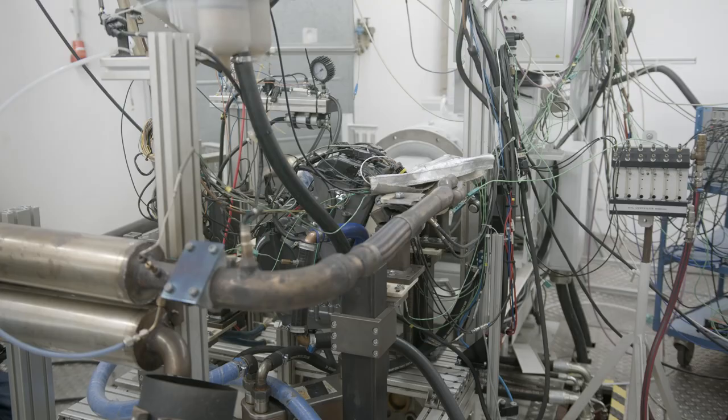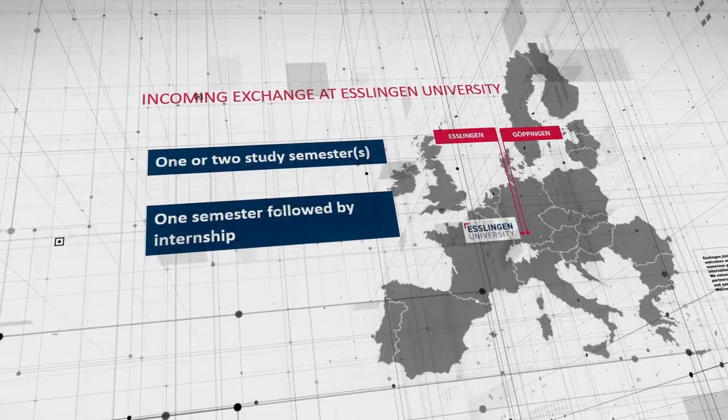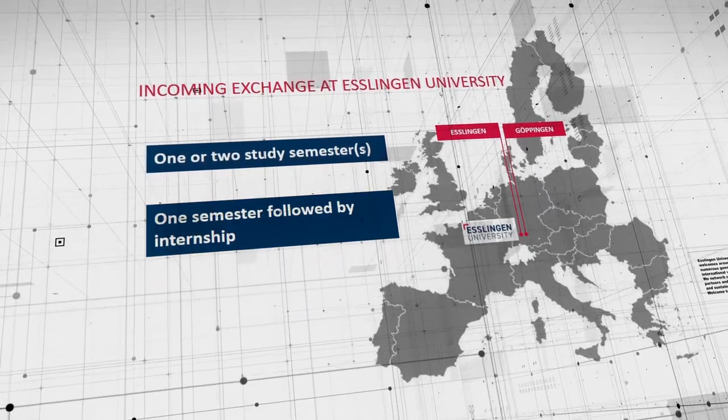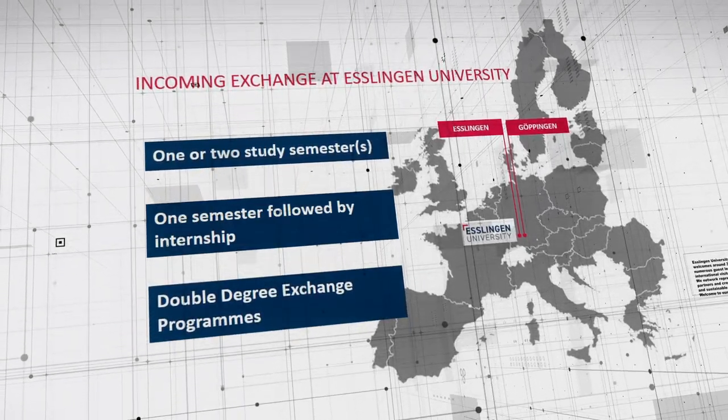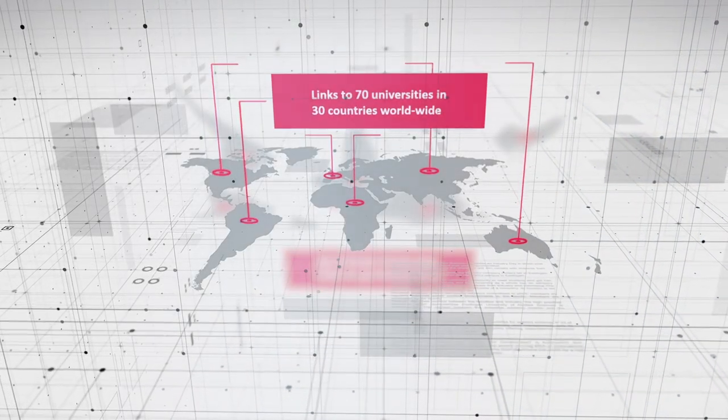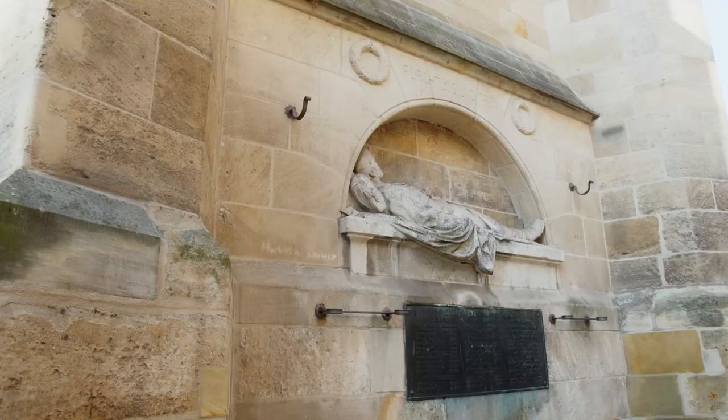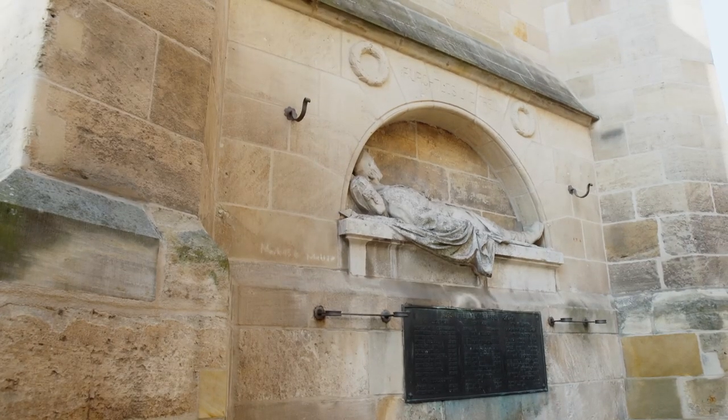Exchange students can study one or two semesters or add an internship semester after the first study semester. Double degree programs are offered with selected partner universities, and English-taught courses can also be chosen across faculties. Incoming students attend free-of-charge German classes appropriate to their level and a history course with insights into German culture.